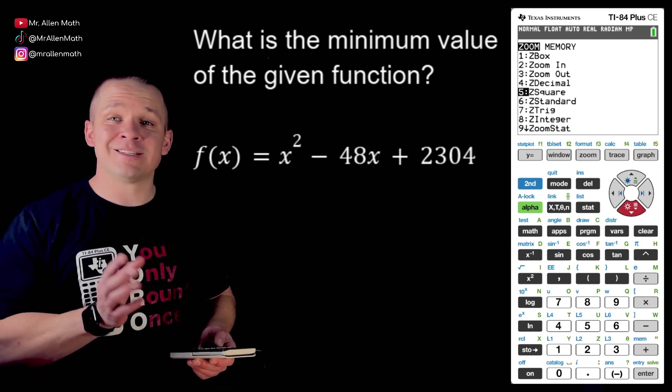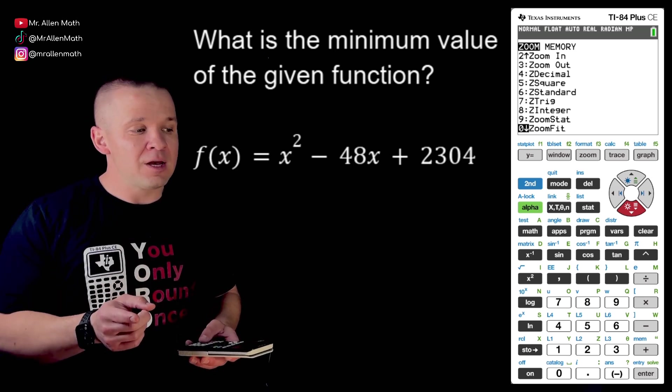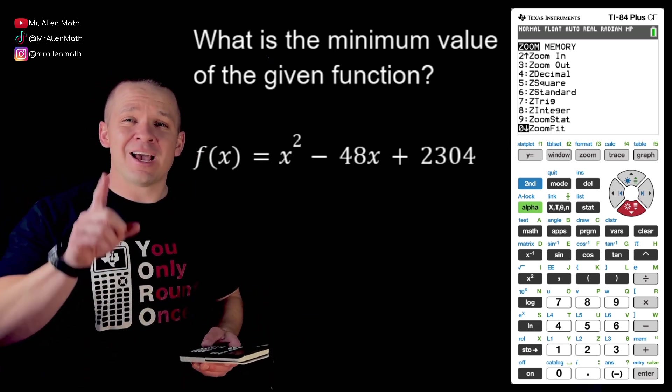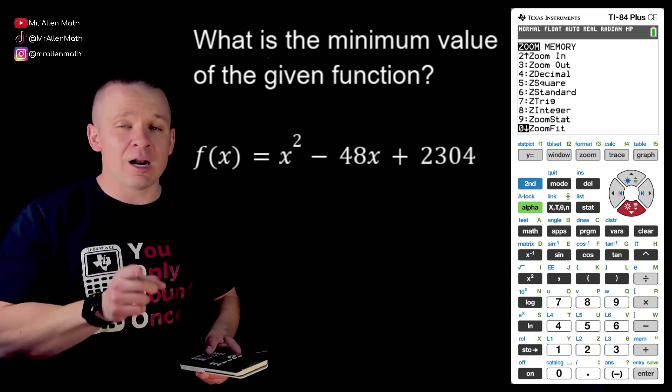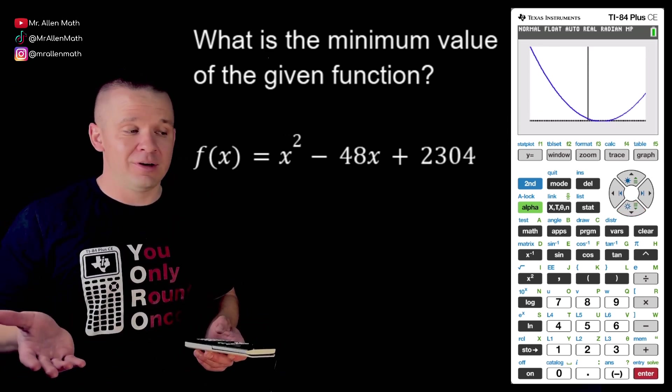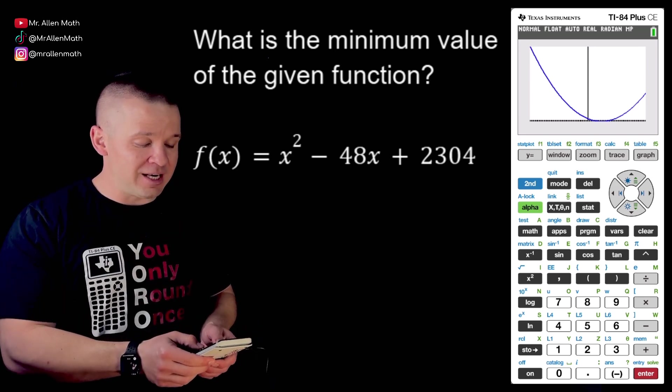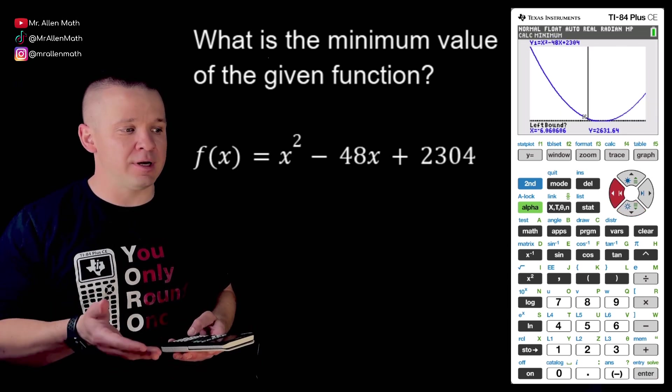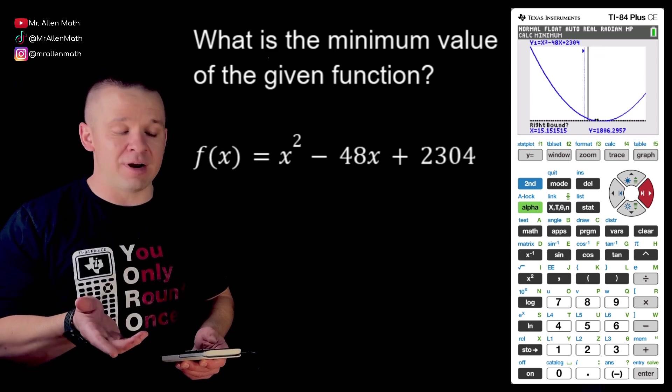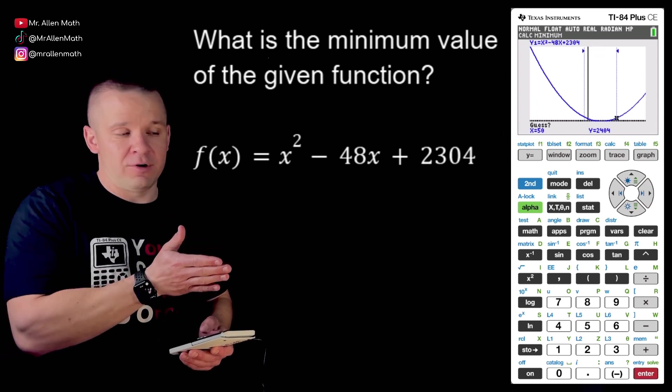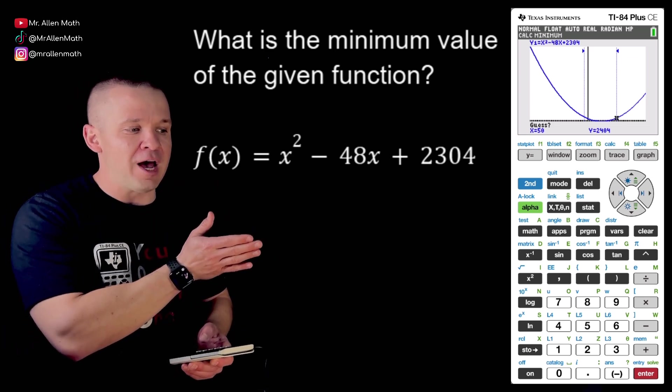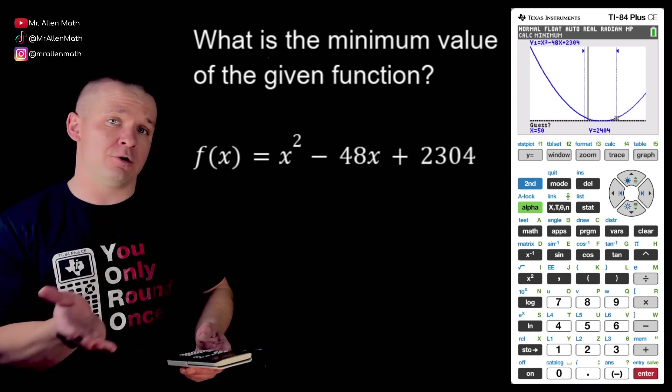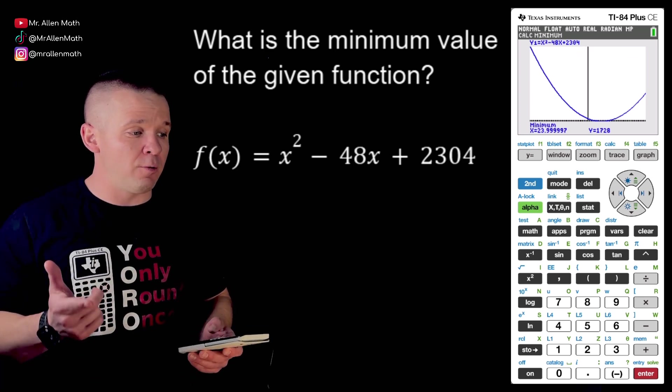But check this out. If I instead hit zoom 0 which is zoom fit, what my calculator is going to do is between the negative 100 and positive 100 for your x values it's going to automatically adjust the y values. And I know this is a positive quadratic, it's going to have like a u shape and I'm looking for that lowest point. So let's hit zero here zoom zero and look at that. It adjusts it for me and now what I can do is I can hit second calc and I'm going to go for minimum here.